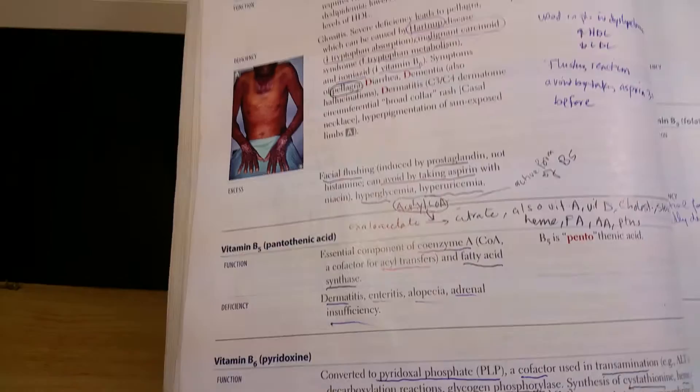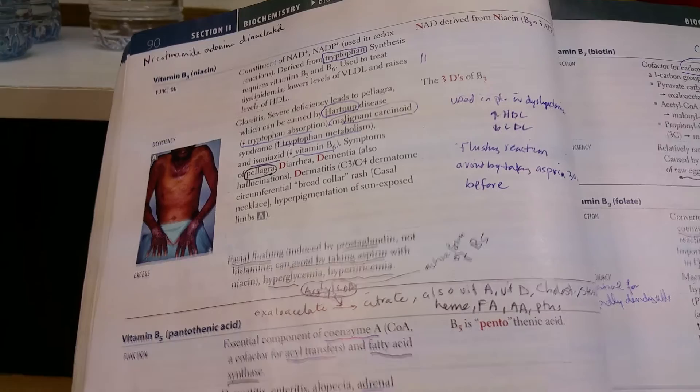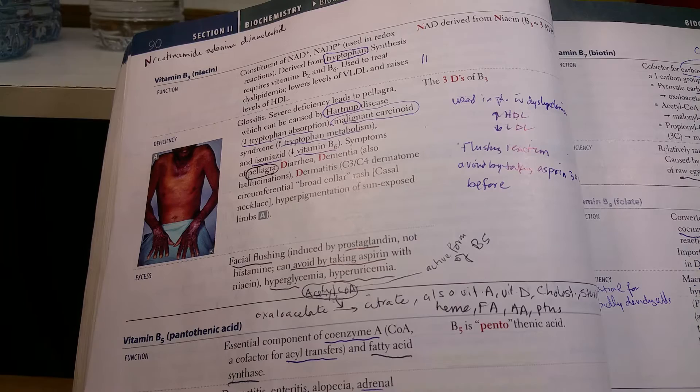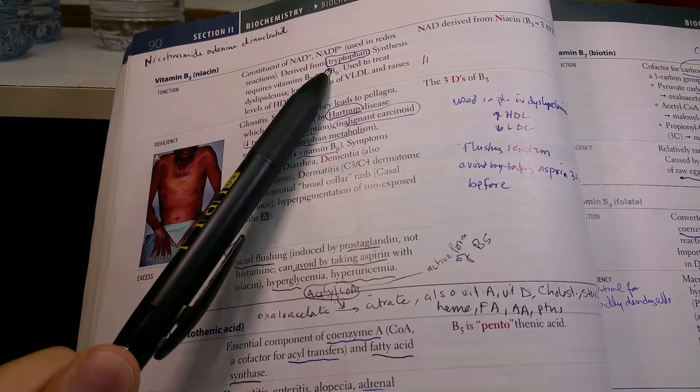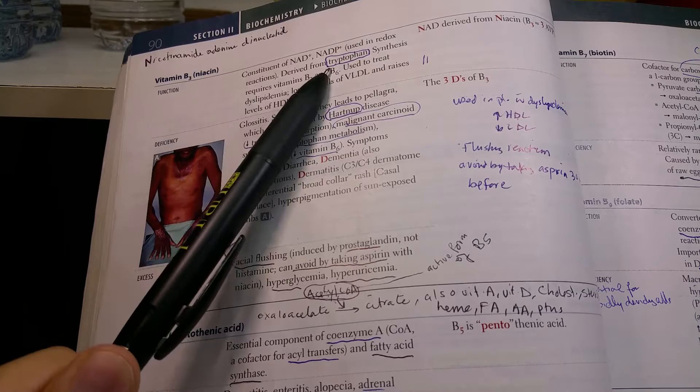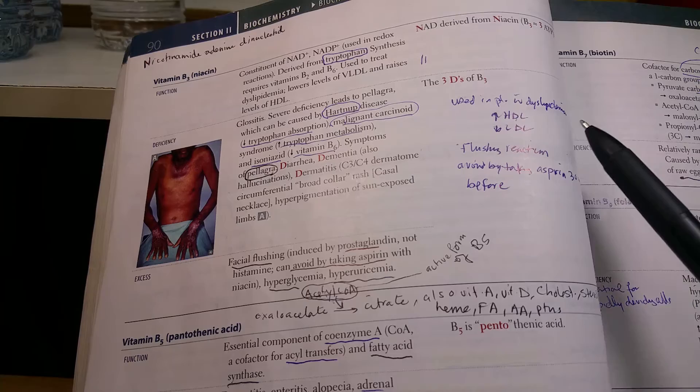We'll talk about niacin now, also a very important vitamin: nicotinamide adenine dinucleotide, NAD and NADP. They're also used in redox reactions, dehydrogenase reactions. One thing to note is the relationship to tryptophan. It is derived from the amino acid tryptophan, so anything affecting tryptophan metabolism will affect vitamin B3.